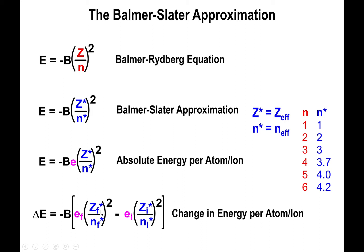The formula has the effective nuclear charge of the final species divided by the effective principal quantum number of the final species, squared, multiplied by the number of electrons present in that group — and we subtract from that the very same terms for the initial species. This accounts for more than one electron, which is why we include the final and initial terms in the equations.